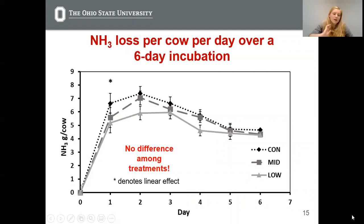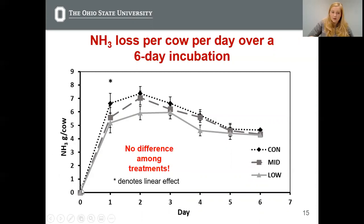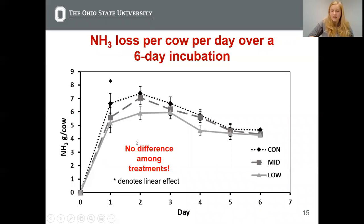Looking at the manure emission results, we have ammonia in grams per cow along the y-axis and day of incubation along the x-axis. The top dotted line is our control, the dashed line is the mid, and the solid line is the low. Only for day one was there a significant linear decrease in manure ammonia with decreasing DCAD; the rest of the days were similar to one another. Therefore, instead of a cumulative reduction of manure ammonia emissions, we only saw a softening of the peak of manure ammonia loss.